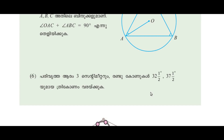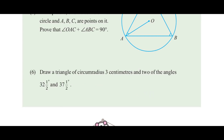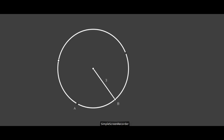The triangle has a circumradius of 3 centimeters and two of the angles are 32 and a half degrees and 37 and a half degrees.